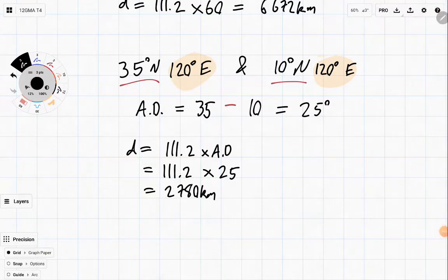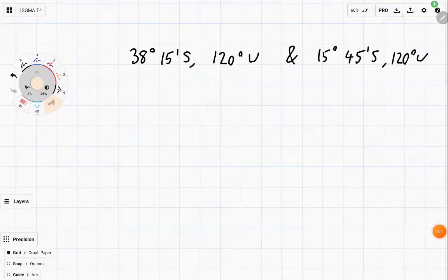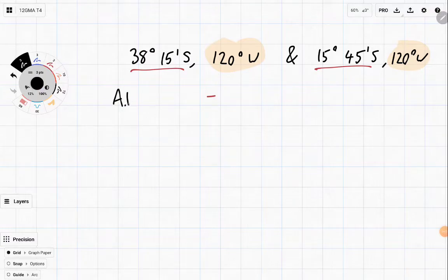So that's how we work at distance. I'm going to show you one more example, just because what if we had to deal with minutes as well? In this case, the match is between the 120 degrees west. Since they're both south, that means we're going to be subtracting for the angular distance. So AD is going to be equal to 38 degrees and 15 minutes minus 15 degrees and 45 minutes.